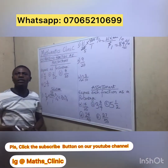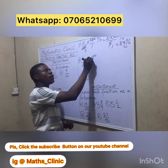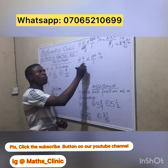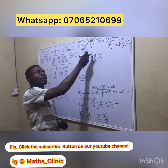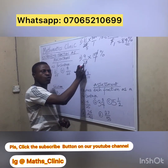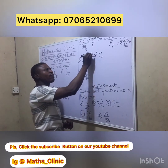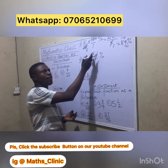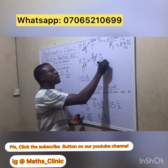Third example: 9 over 20. Let's change it to percentage. Multiply by 100 over 1%. Cancel the zeros: 20 and 100 share a common factor. You are left with 10 on top and 2 on the bottom. 2 goes into 10 five times. So we multiply 9 times 5, which gives us 45%.